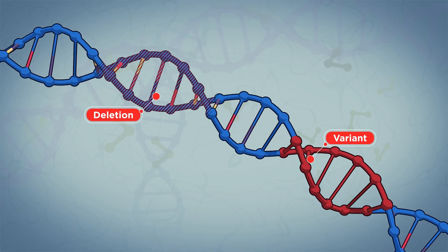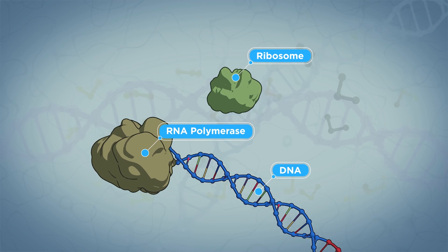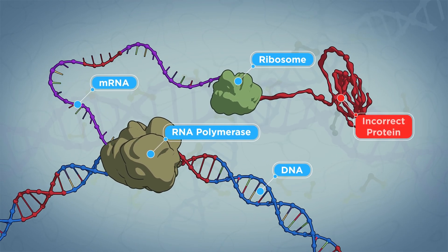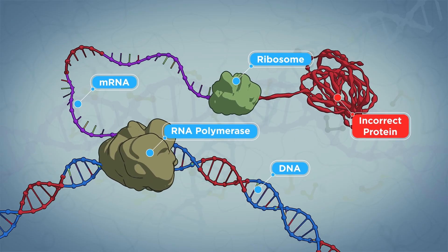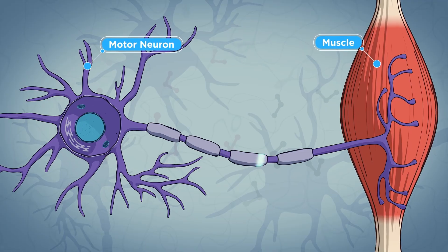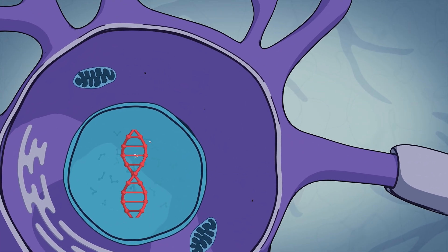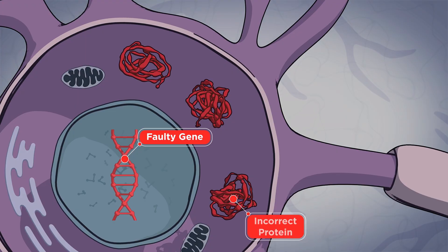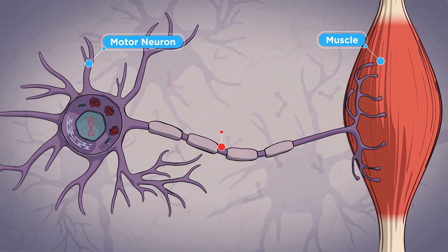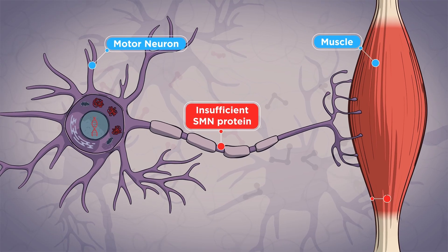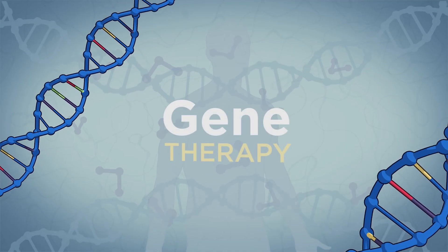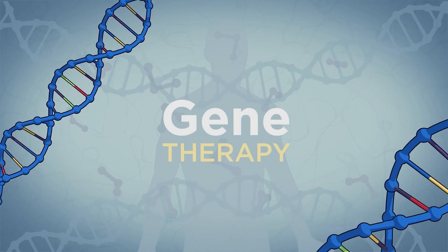Changes to DNA can take many forms. Deletions, for example, result in missing instructions, while gene variants result in incorrect changes to the instructions. Any of these changes can affect how our bodies function. For example, spinal muscular atrophy, or SMA, usually occurs when a person is missing both copies — one from each parent — of their SMN1 gene. Rarely, SMA can be due to a disease-causing variance in the SMN1 gene, resulting in a faulty gene. Gene therapy is a medical approach that may be used to correct these genetic changes.